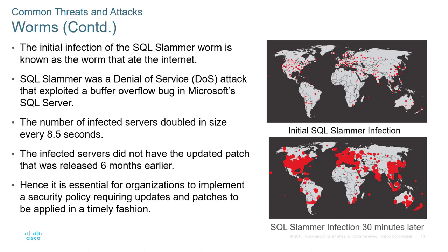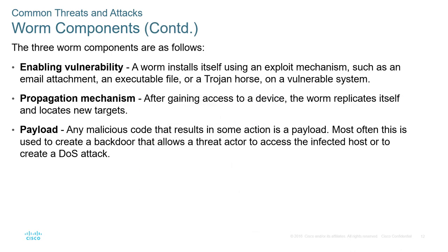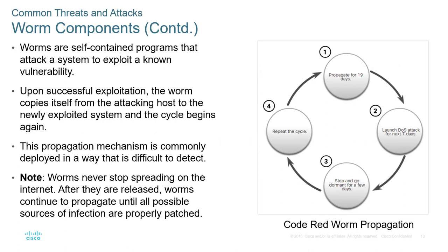Worms are increasingly dangerous and can spread rapidly. The SQL Slammer worm — known as the worm that ate the internet — was a DDoS-type attack that exploited a buffer overflow bug in Microsoft SQL Server. The number of infected servers kept doubling every few seconds. The infected servers did not have the patch until six months after the issue. You have to stay on top of patching and protection and actually follow security policies — not just say you're going to do them. A worm is made up of three components: a vulnerability, a propagation mechanism, and a payload.